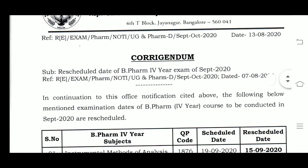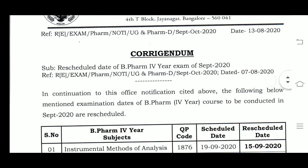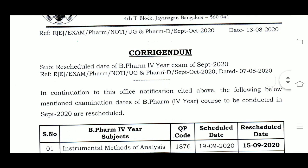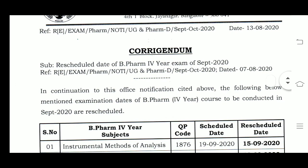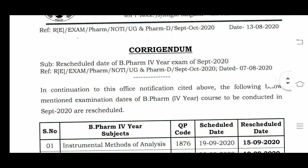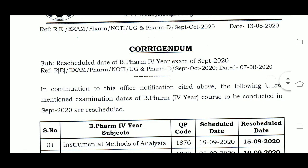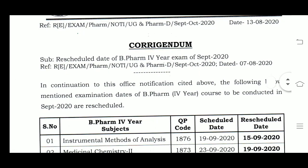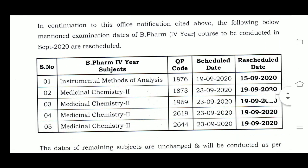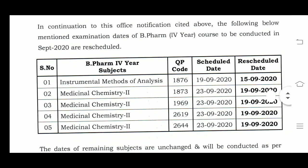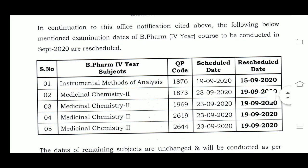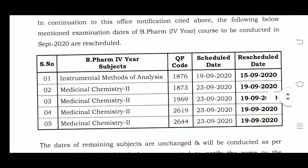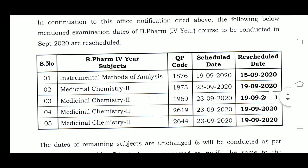This is a PDC for the 4th year exam of September 2020, on the subject of Instrumental Method of Analysis. The QP codes are 19, 15, 19, 20, 20.